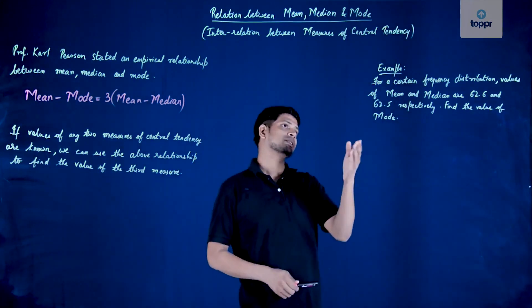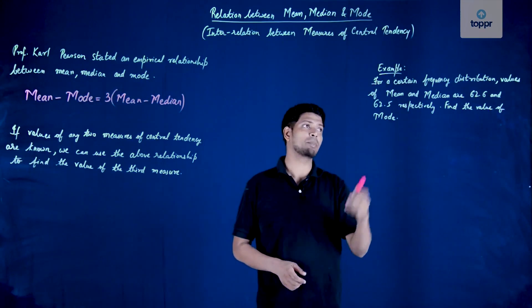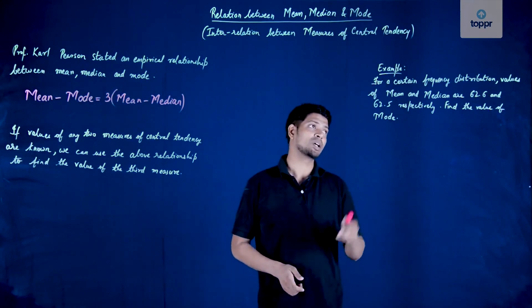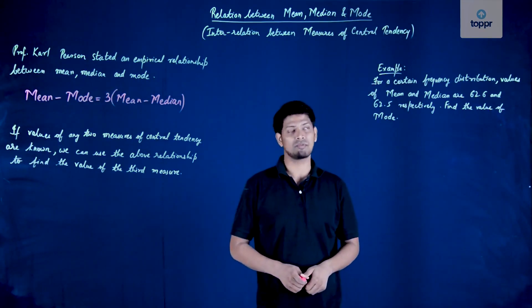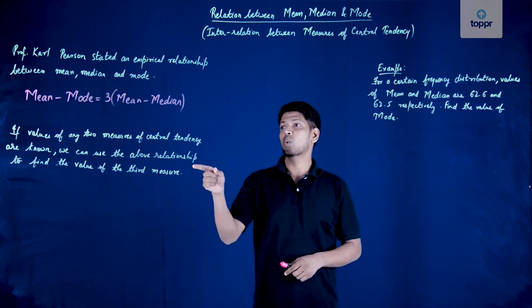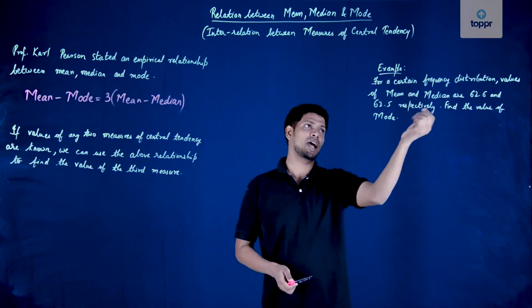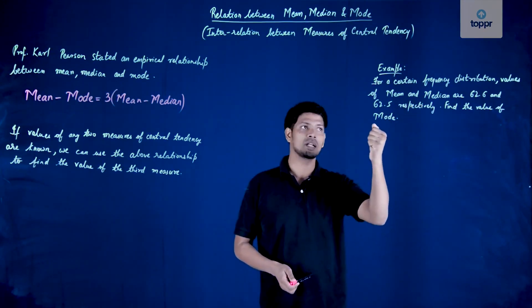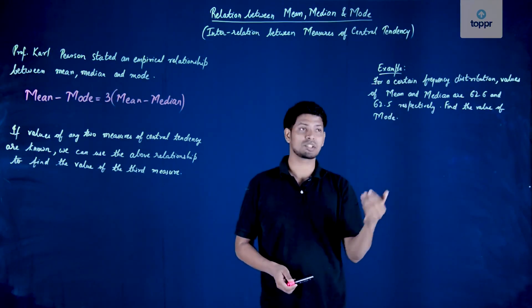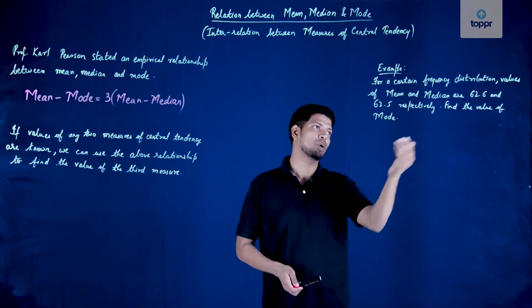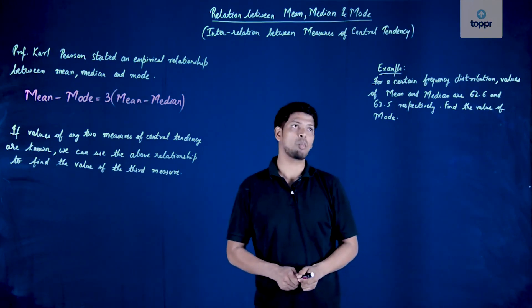For a certain frequency distribution, the value of mean and median are 62.6 and 62.5 respectively. Here two measures of central tendency are given — median and mean. We can use the interrelationship to find the value of mode, because that is what is asked.